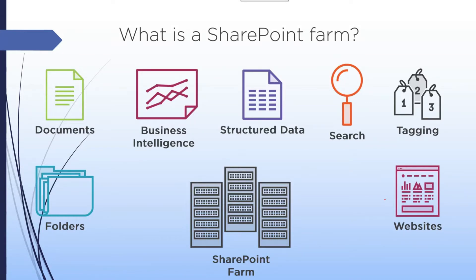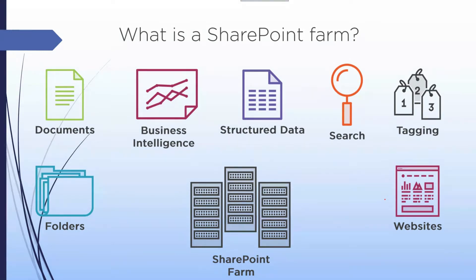Now in the definition, a farm provides document management and business intelligence services. When we talk about data — structured data versus unstructured data — a document like a Microsoft Word file, with fields like first name, last name, date — that is structured data organized in a table or structured format. These are examples of enterprise services.